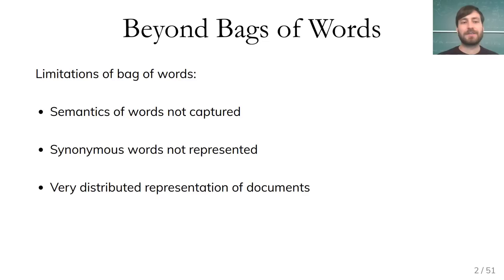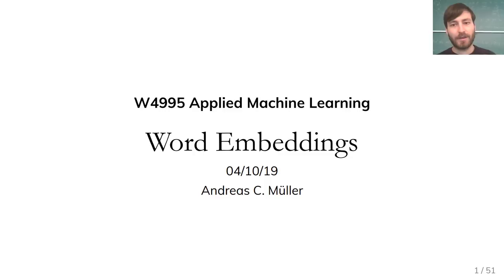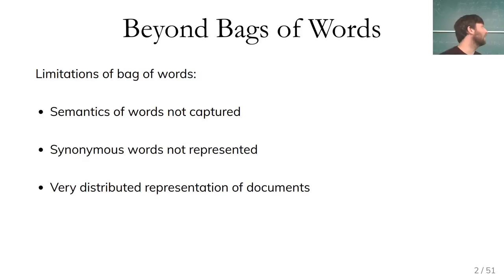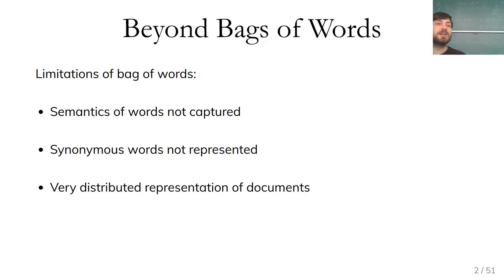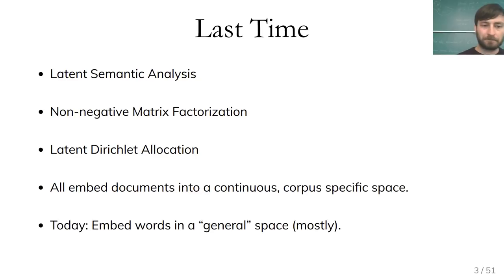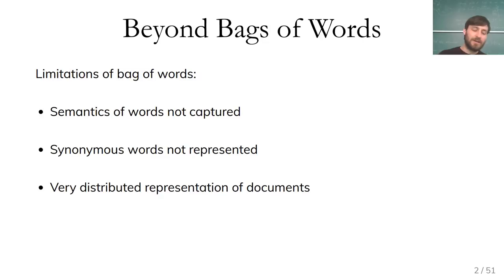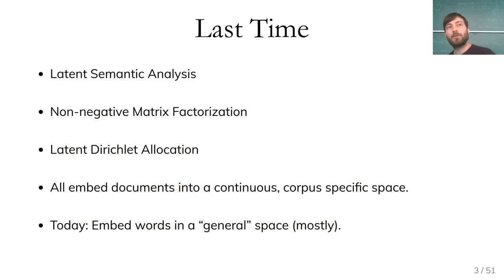As a brief reminder, our first approach to text representation was bag of words. The limitations were that semantics of words are not captured — each word is modeled as a discrete entity, so synonyms and word meanings are not represented. It's also a very distributed and hard-to-understand representation of a document. Last time we looked at latent semantic analysis, non-negative matrix factorization, and latent Dirichlet allocation.